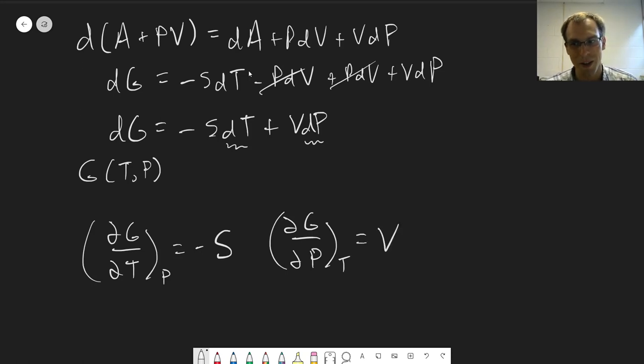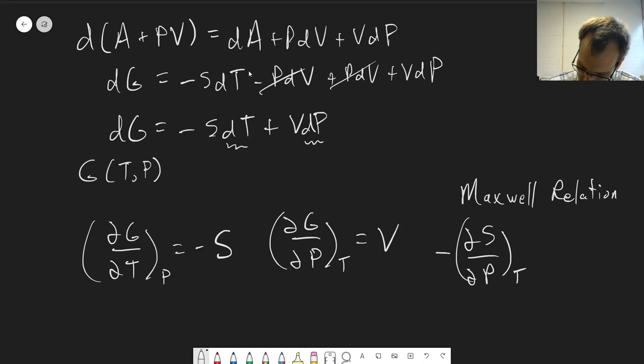So now we can relate Gibbs energy to volume. Also a very useful relationship there. And finally, the Maxwell relation, which is another one that ends up being very useful when we're talking about Gibbs energy, is minus dS dP at constant T is equal to dV dT at constant P.